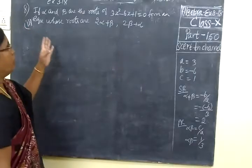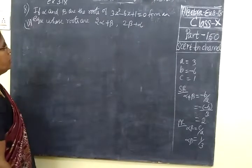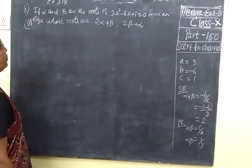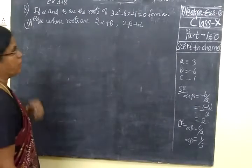If alpha and beta are the roots of 3x² minus 6x plus 1 equal to 0, form an equation whose roots are 2 alpha plus beta, 2 beta plus alpha.